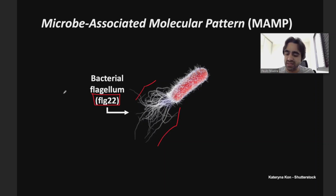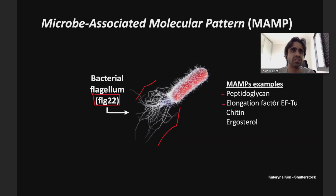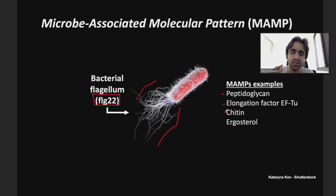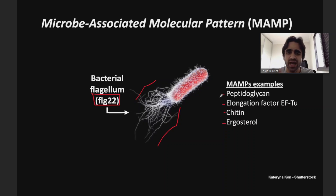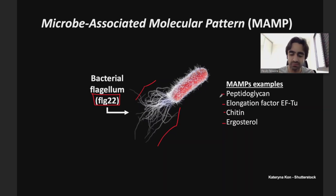There are many other examples of MAMPs, like peptidoglycan — part of the bacterial cell wall — or the protein elongation factor EF-Tu, a highly conserved protein in bacteria. Plants evolved strategies to perceive this protein. Chitin is another MAMP — the same sugar that makes the exoskeleton of insects, found in the cell wall of fungi. And ergosterol, a lipid similar to our cholesterol, is specific to fungi. Basically, plants can perceive microbial molecules — molecules normally absent in the plant — and when they are there, the plant says there must be an invader.